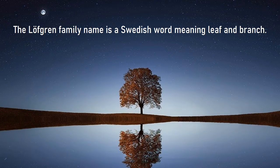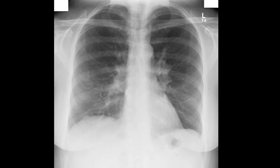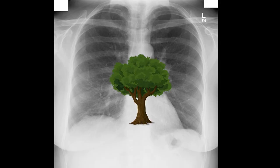So how do you remember the difference between the two syndromes? The Lofgren family name is a Swedish word meaning leaf and branch. Sven Lofgren himself was a Swedish physician who named the syndrome. To me, bilateral hilar lymphadenopathy looks a bit like a tree, and Lofgren sounds like leaf green. So I'm going to remember Lofgren's syndrome as a tree on a chest x-ray.